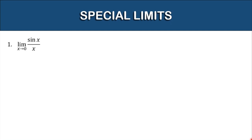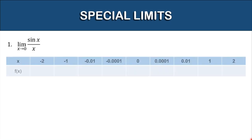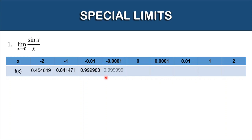The first thing we need to do is have a table of values, setting values for x that are approaching zero. So we have these values approaching zero from the left and from the right. By substituting one by one: if x is negative 2, the function gives this value; if x is negative 1, the value is this; and continuing with closer values to zero, each gives its corresponding function value.